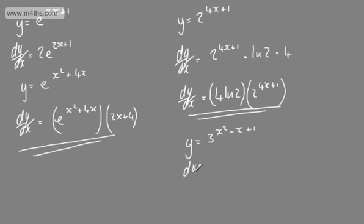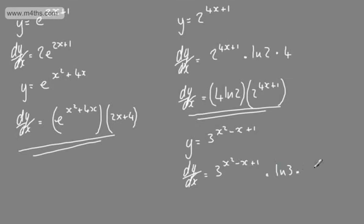So what we have then: dy by dx — if we differentiate the outside function and leave the inside function alone — we're going to get 3 to the x squared minus x plus 1, multiplied by the natural log of 3, multiplied by the derivative of the inside function, which is going to be 2x minus 1.